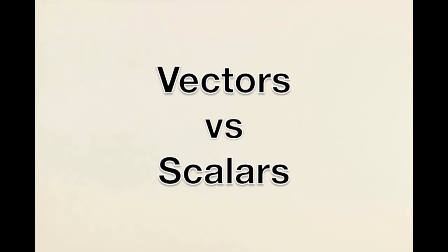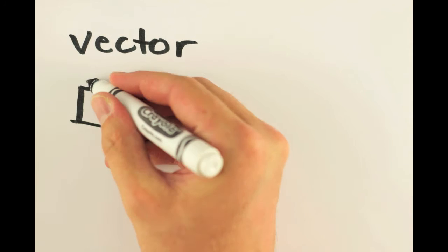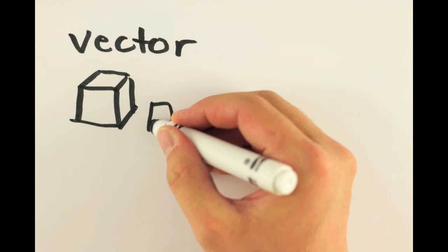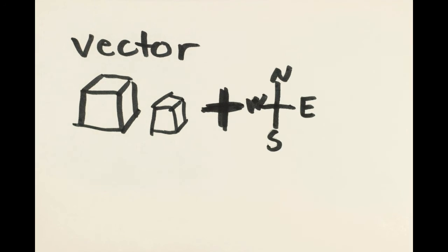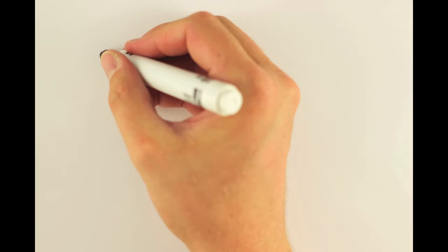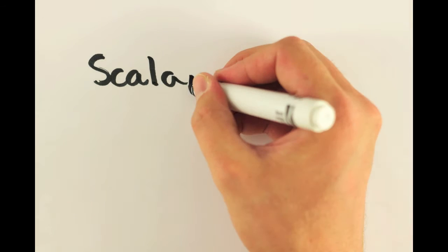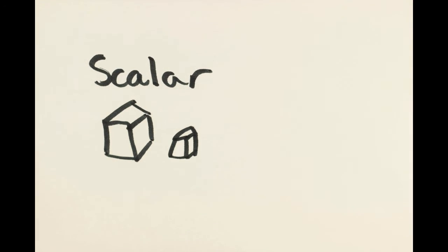Let's talk about the differences between vectors and scalars. Vectors have what's called magnitude and direction. Magnitude is the size or the amount of it, and direction is kind of obvious — it's the way it's pointing. Scalars, on the other hand, only have magnitude. They only have a quantity.